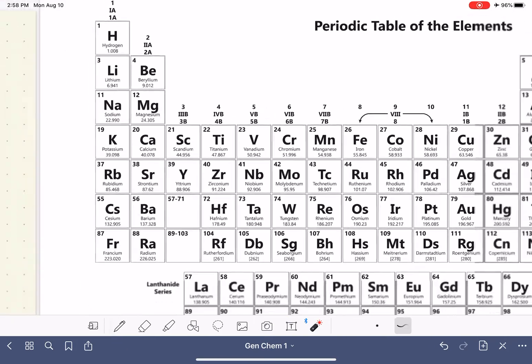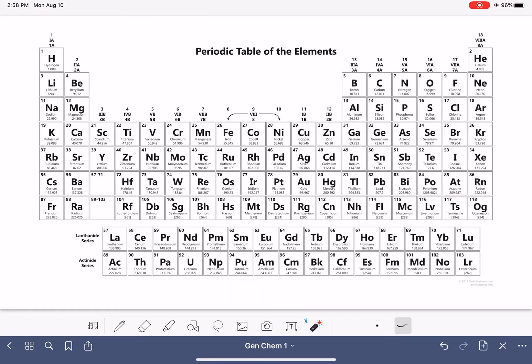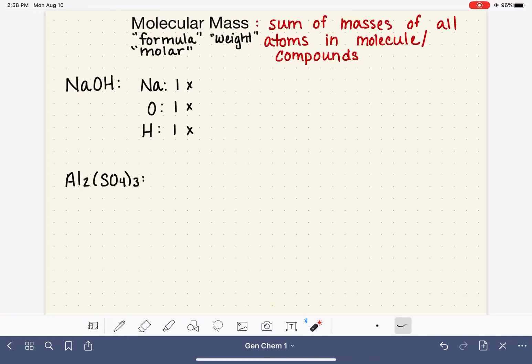Now, if you're just doing this for yourself, for me personally, it's just a lot faster for me to round those masses. So 23 for sodium, 16 for oxygen, and 1 for hydrogen. Rather than carrying all those decimals over from the periodic table, for this particular example, I'm just going to round those weights.